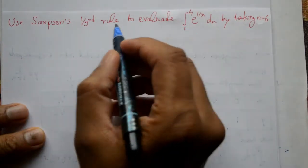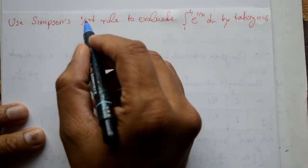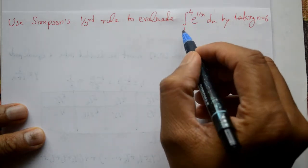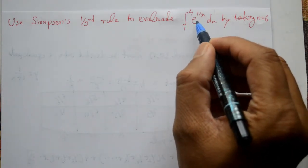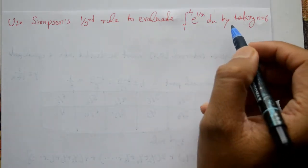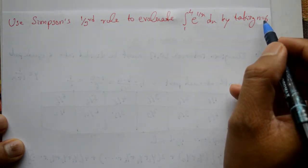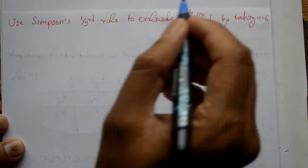Welcome friends, this is problem to solve. Use Simpson's one-third rule to evaluate integration of 1 to 4, e to the power 1 by x with respect to x by taking n is equal to 6, whether 6 equal parts.